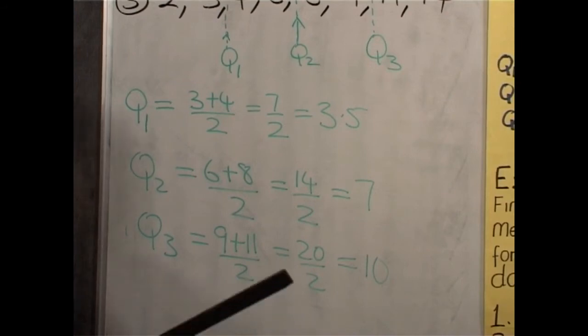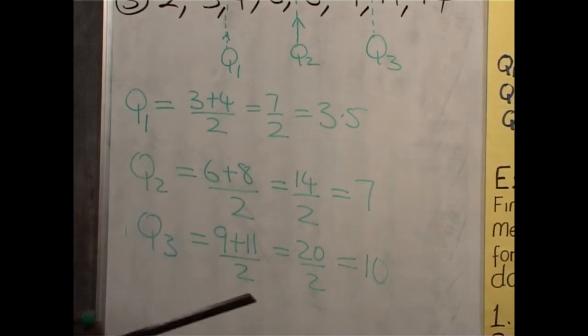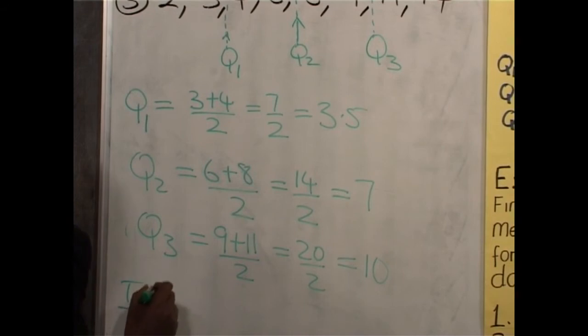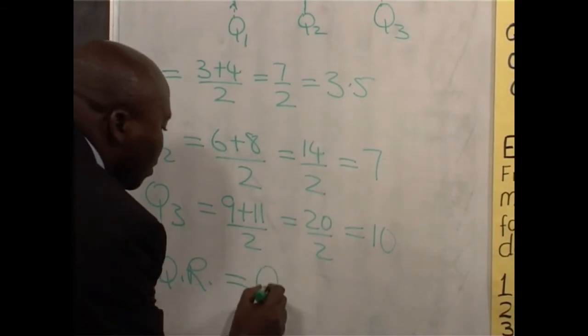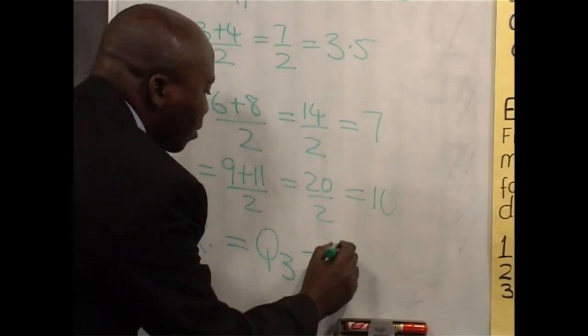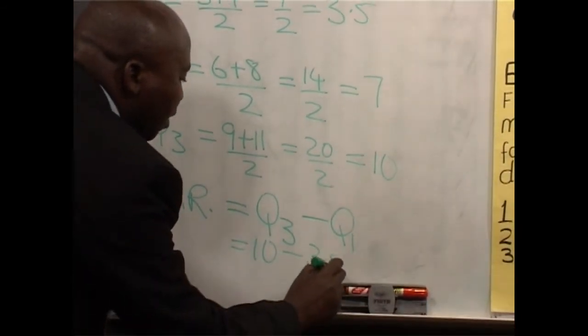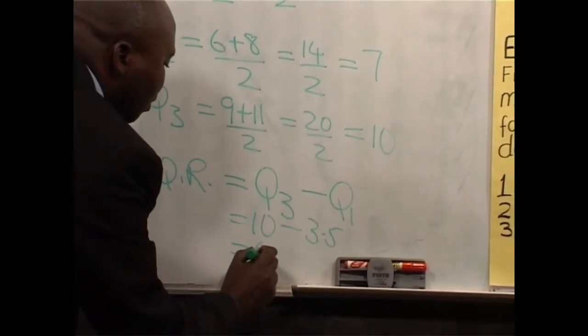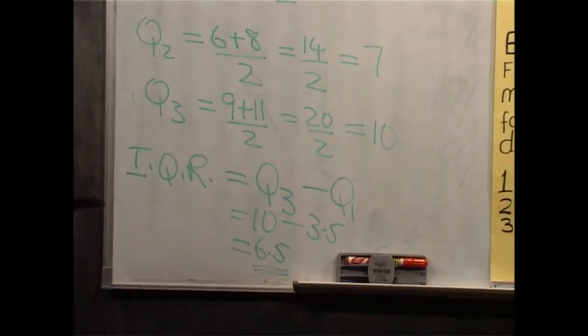Finding the semi-inter-quartile range using the usual formula: it will be half of Q3 minus Q1. In this case, let us find the inter-quartile range. We should master the formula — the inter-quartile range is Q3 minus Q1. Our Q3 is 10 and Q1 is 3.5. So the inter-quartile range will be 6.5. This is how we fix the positions of Q1, Q2, and Q3 — very important measures of spread.